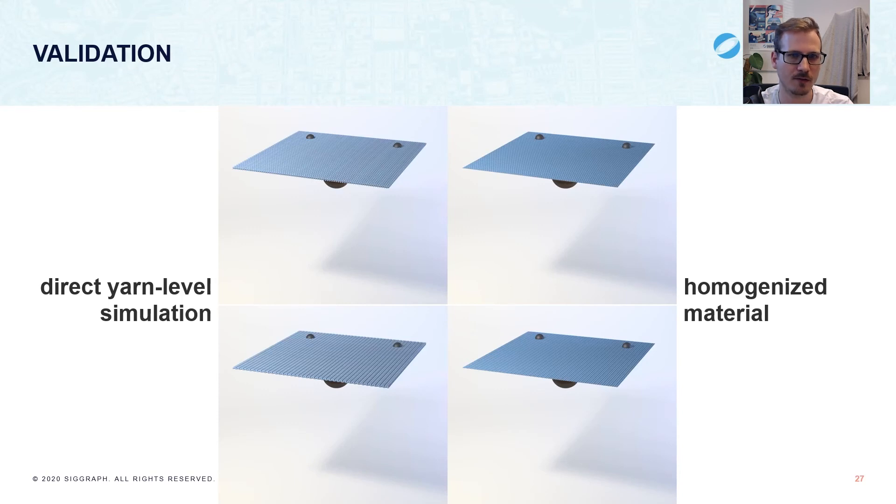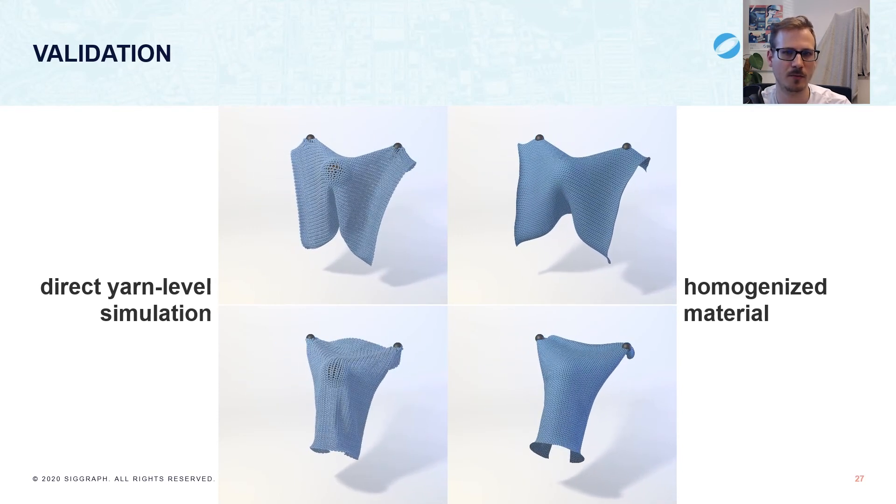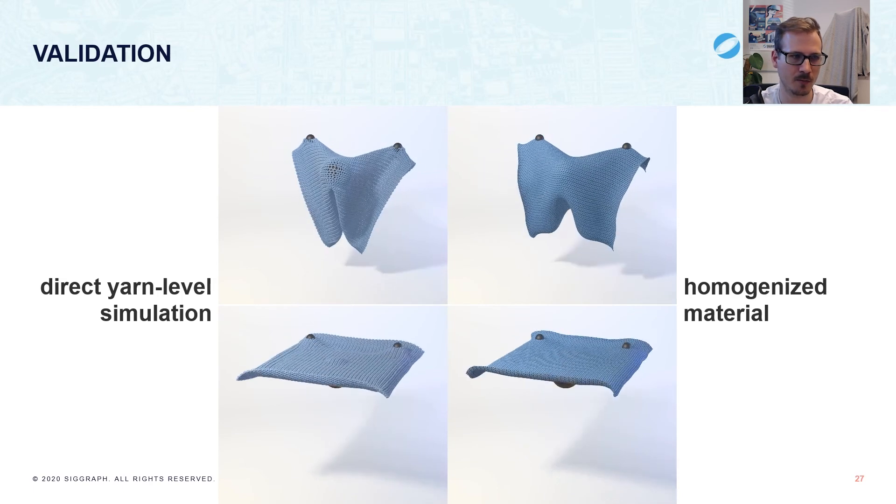The stockinette knit has an interesting tendency to bend or curl, which results in very distinct drape shapes, which our homogenized material is able to reproduce.